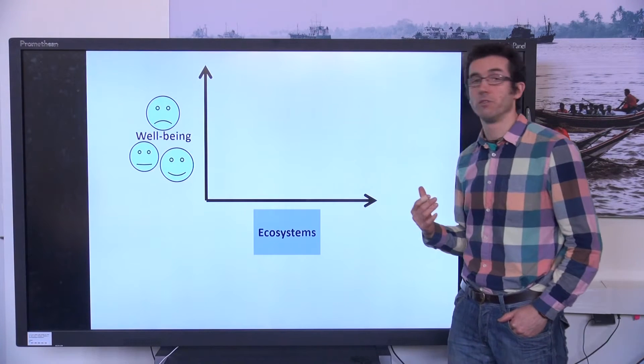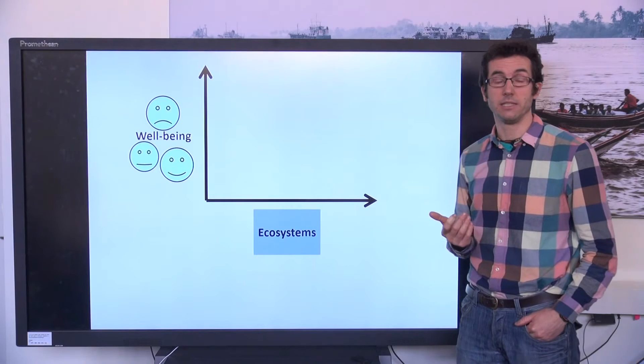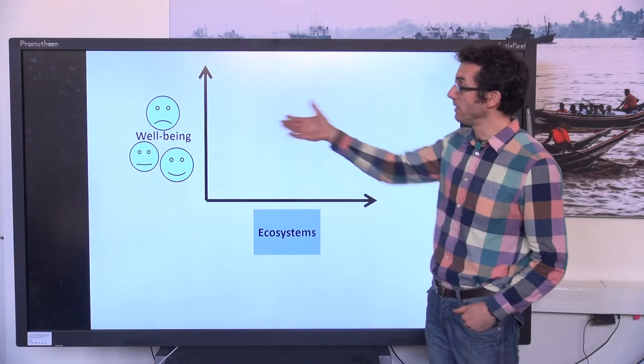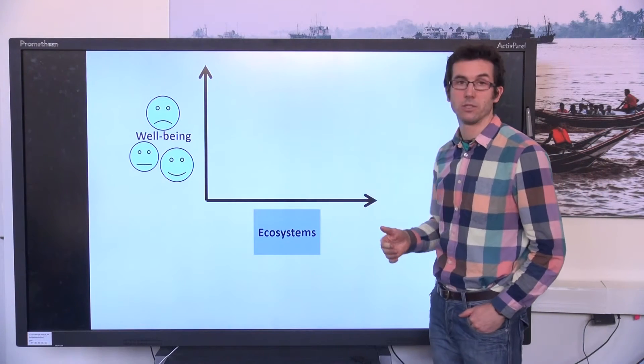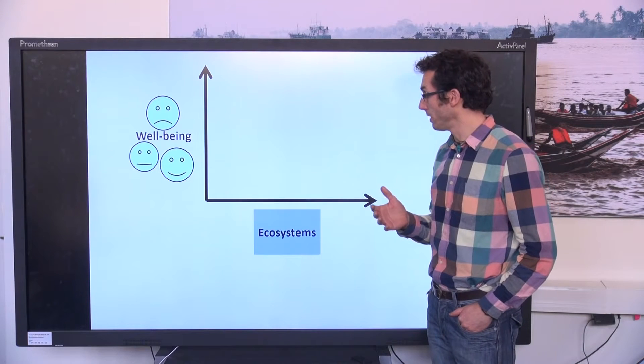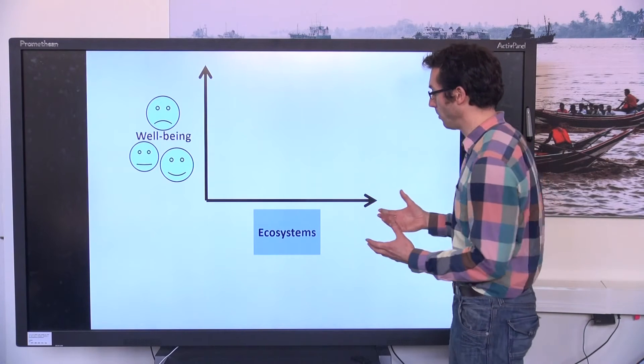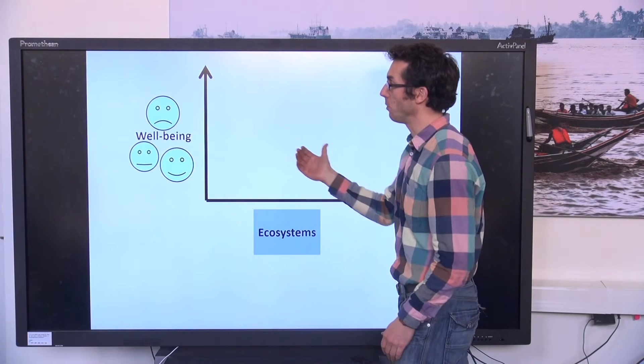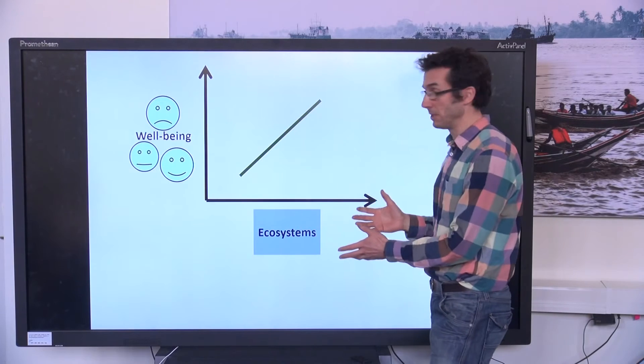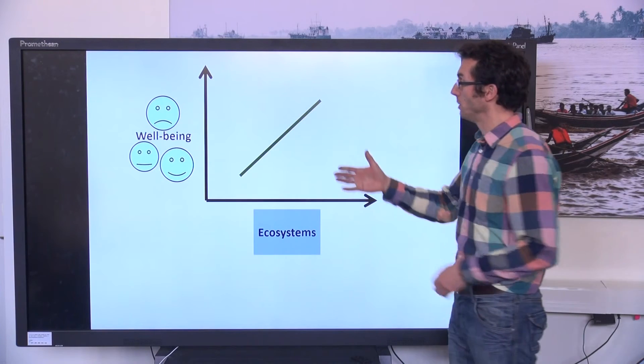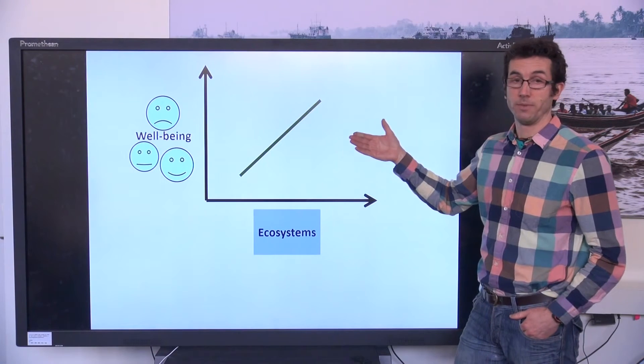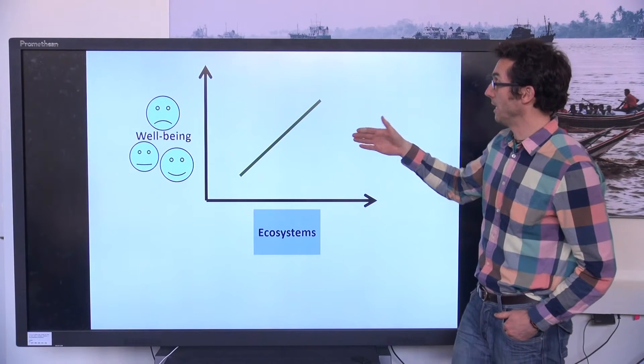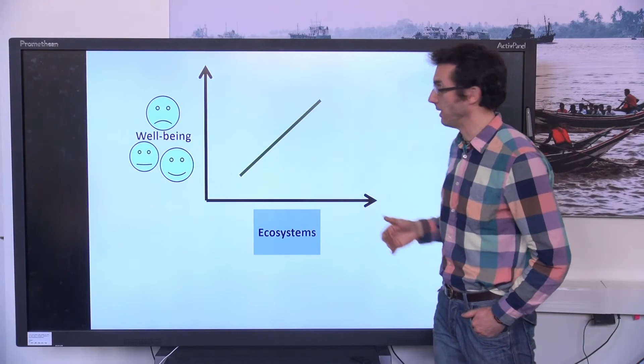We introduced the concept of ecosystem service elasticity, which is basically how sensitive is human well-being to changes in ecosystems. The concept of ecosystem services captures the idea that we get goods or services or protections from ecosystems that enhance our well-being, suggesting that enhancements in ecosystems can also enhance well-being, which would mean a positive ecosystem service elasticity, a positive relationship between well-being and ecosystems.